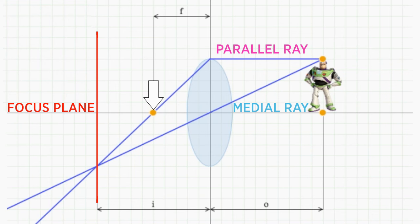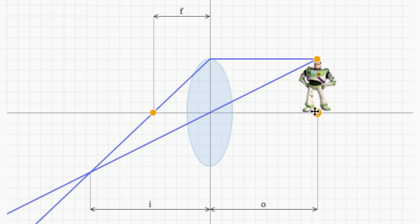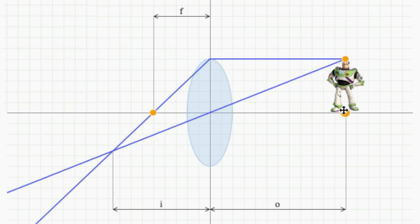So the focal length defines where a parallel ray crosses the x-axis. So now we have a definition of two rays which leave our object, medial and parallel. And where the two rays intersect defines the distance i at which the object comes into focus.